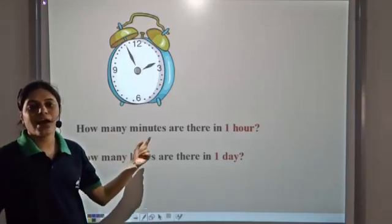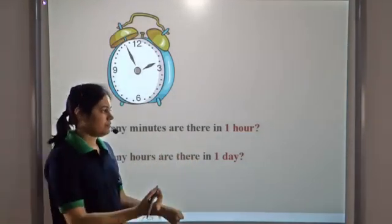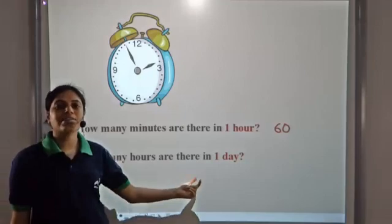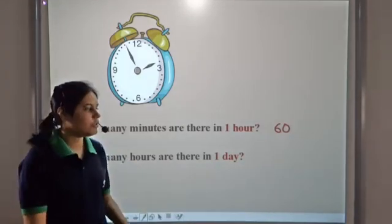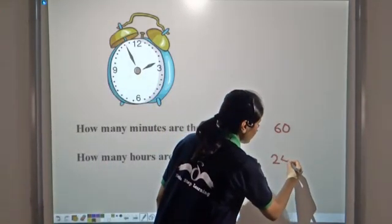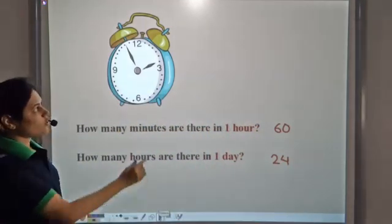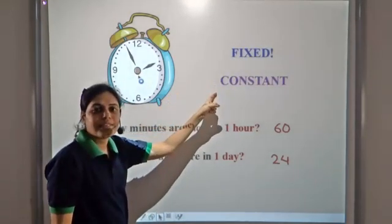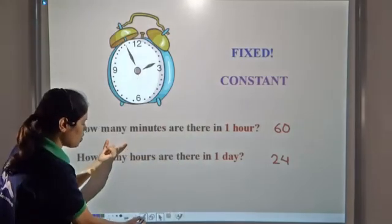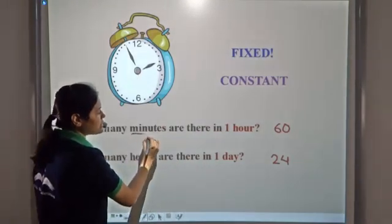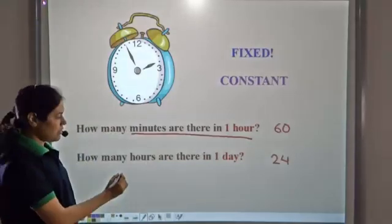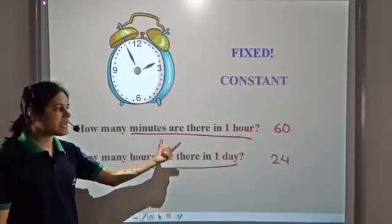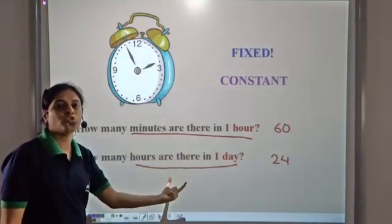How many minutes are there in one hour? We know it is sixty. How many hours are there in one day? We know it is twenty-four. So these quantities are fixed, or we can say that these are constant. Minutes in an hour is a constant, and hours in one day is a constant because they have fixed values — values which do not change.